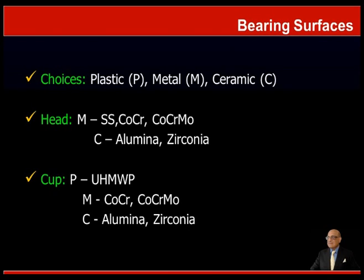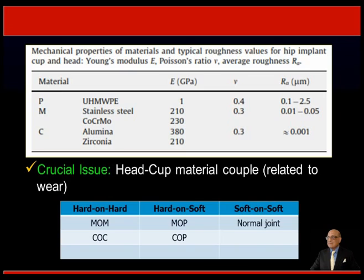The bearing surfaces used are polyethylene, metal, and ceramic. The femoral heads can be made of metal or ceramic. The cup is usually high-density molecular weight polyethylene, cross-linked polyethylene, metal, or ceramic. The crucial issue is the head-cup material couple, which has a direct relation to wear. The couples in a total hip are either hard-on-hard—metal on metal, or ceramic on ceramic—hard-on-soft—metal on poly, or ceramic on poly—or soft-on-soft, which is the normal hip joint.